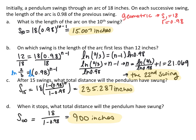For the sum of the first 15 terms: using the sum formula with first term 18, common ratio 0.98, and n = 15: 18 · (1 − 0.98^15) / (1 − 0.98), giving approximately 235.287 inches total. For the total distance when the pendulum stops — mathematically it technically never stops swinging — so the infinite sum is 18 / (1 − 0.98), which gives a total distance of 900 inches.